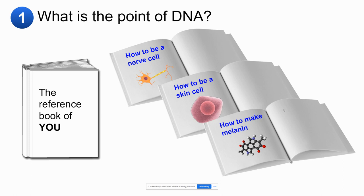In a later lesson called protein synthesis, we'll discuss how cells determine what instructions to look at and how exactly they read and follow those instructions. For today, we're just talking about how the structure of DNA allows it to store information, and we'll talk about how DNA is replicated or copied so that none of the instructions are lost.